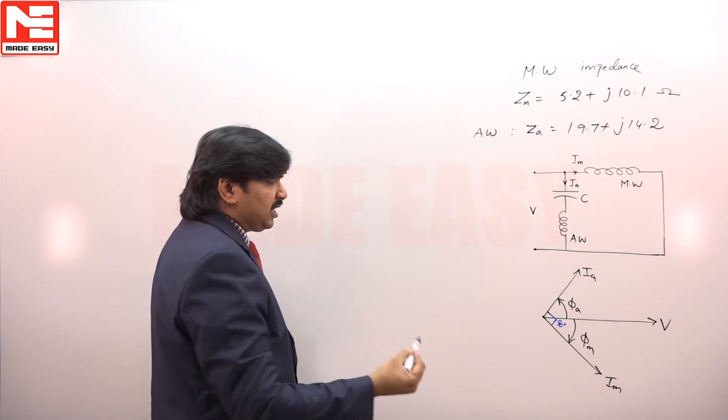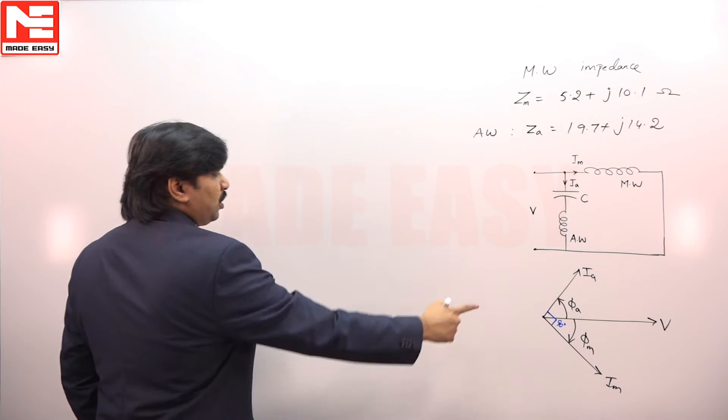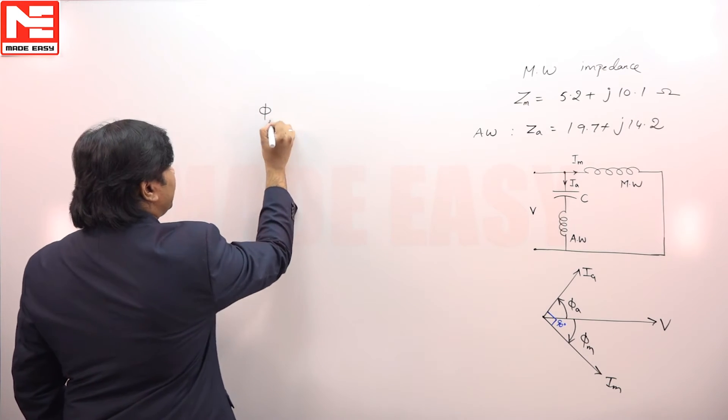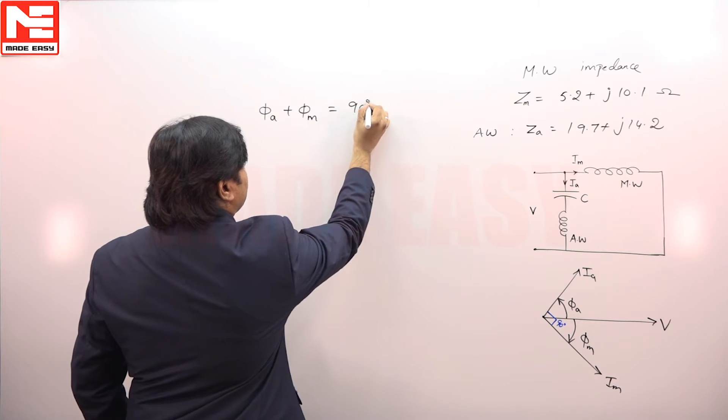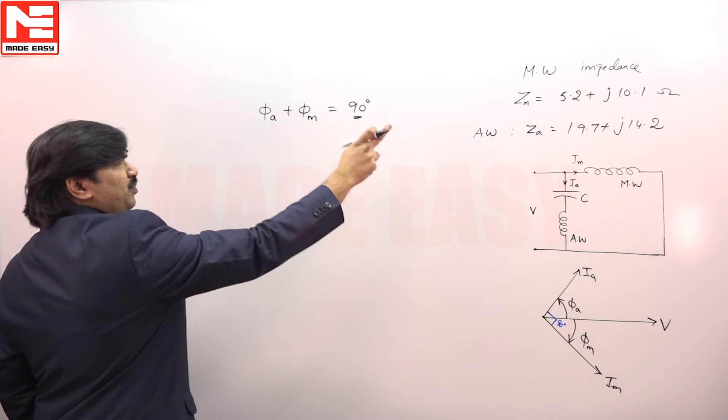So the logic is: phi_a plus phi_m should equal 90 degrees.